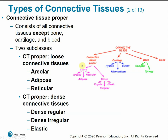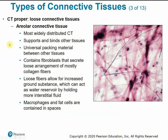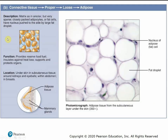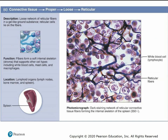Areolar or loose connective tissue is the most widely distributed type, supporting and binding other tissues — kind of a universal packing material between different tissues. The fibers are loosely arranged with lots of extracellular matrix space. Adipose tissue is fat tissue used for nutrient storage and reserve fuel, insulating against heat loss, and supporting and cushioning organs. Reticular connective tissue is a loose network of reticular fibers forming an internal skeleton for some organs like the spleen and lymph nodes.